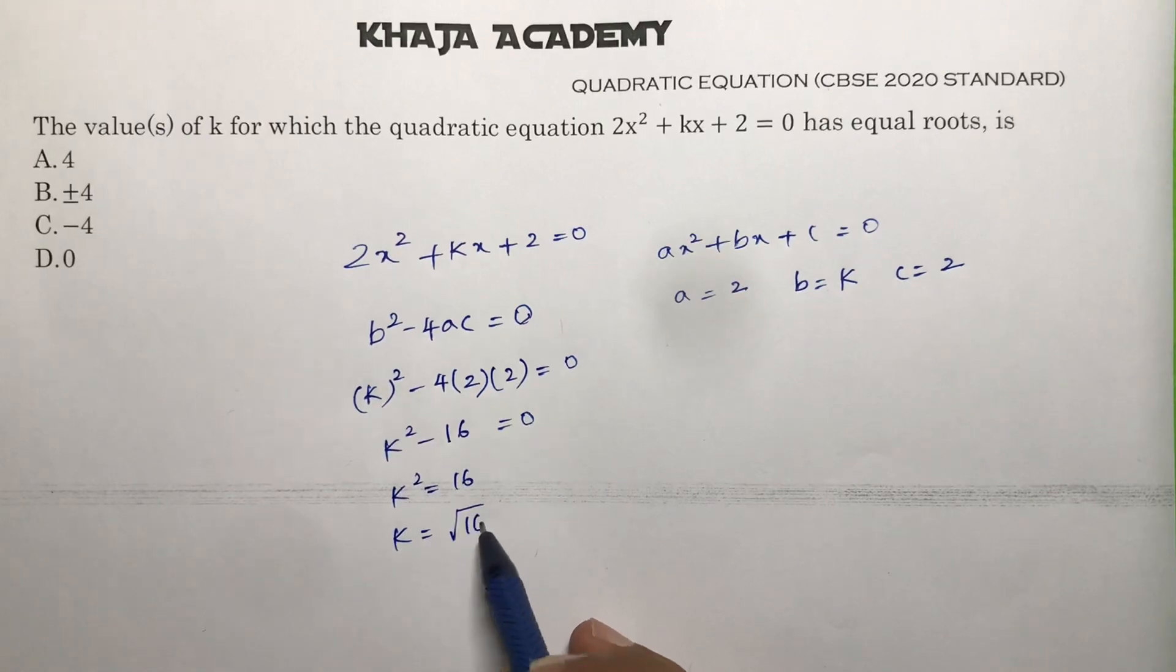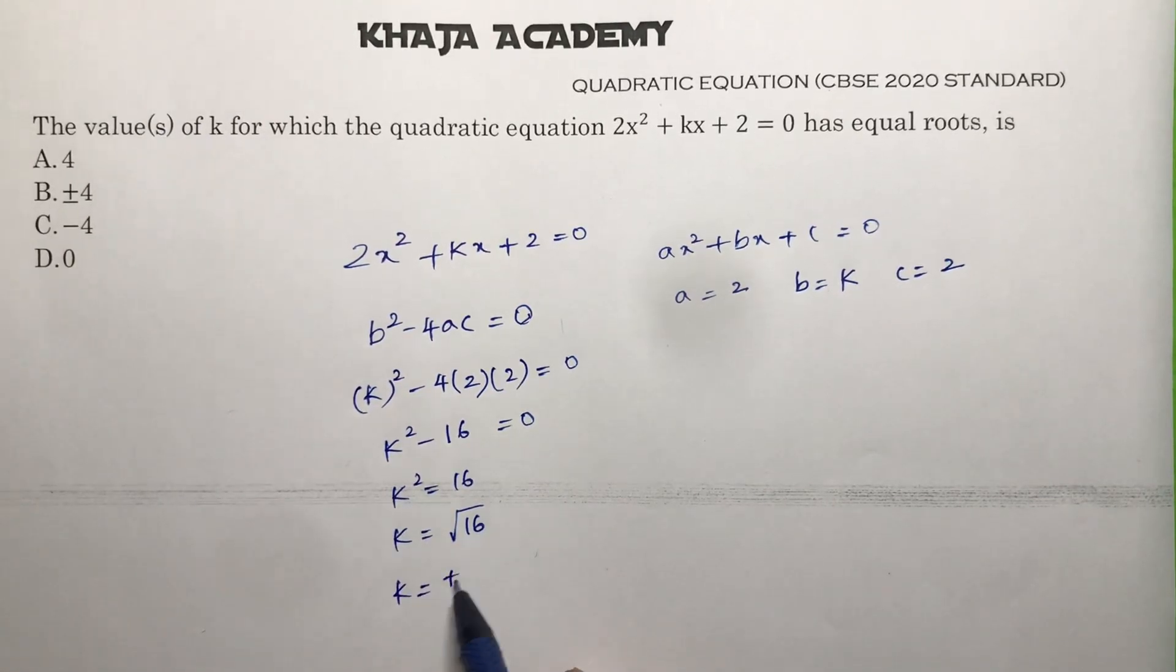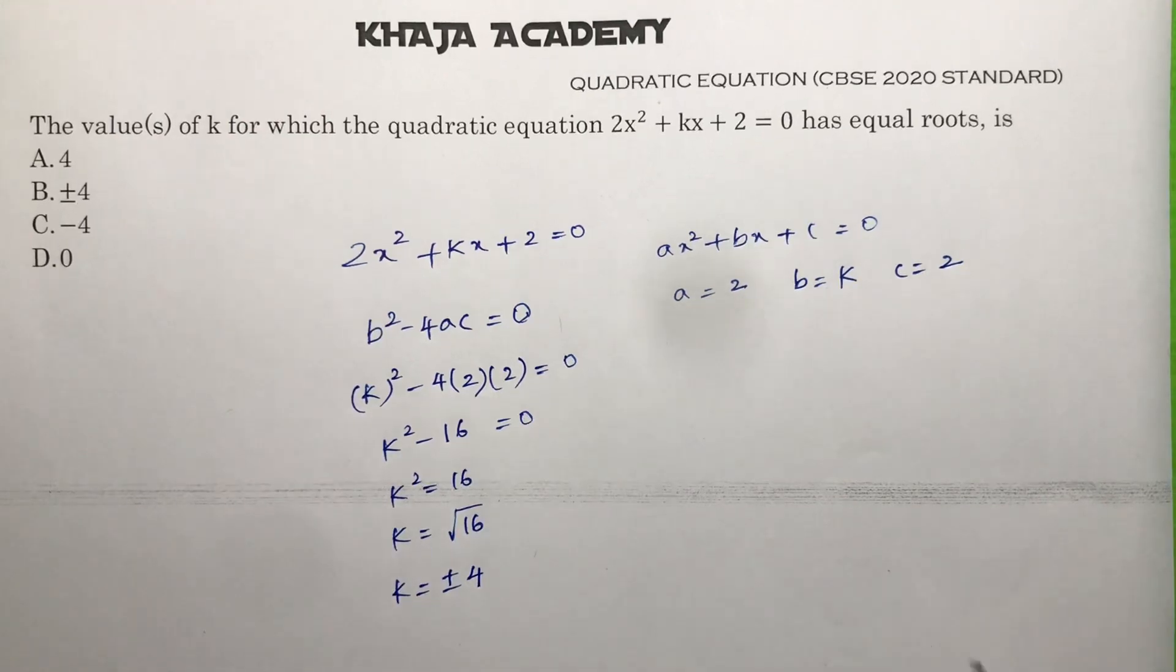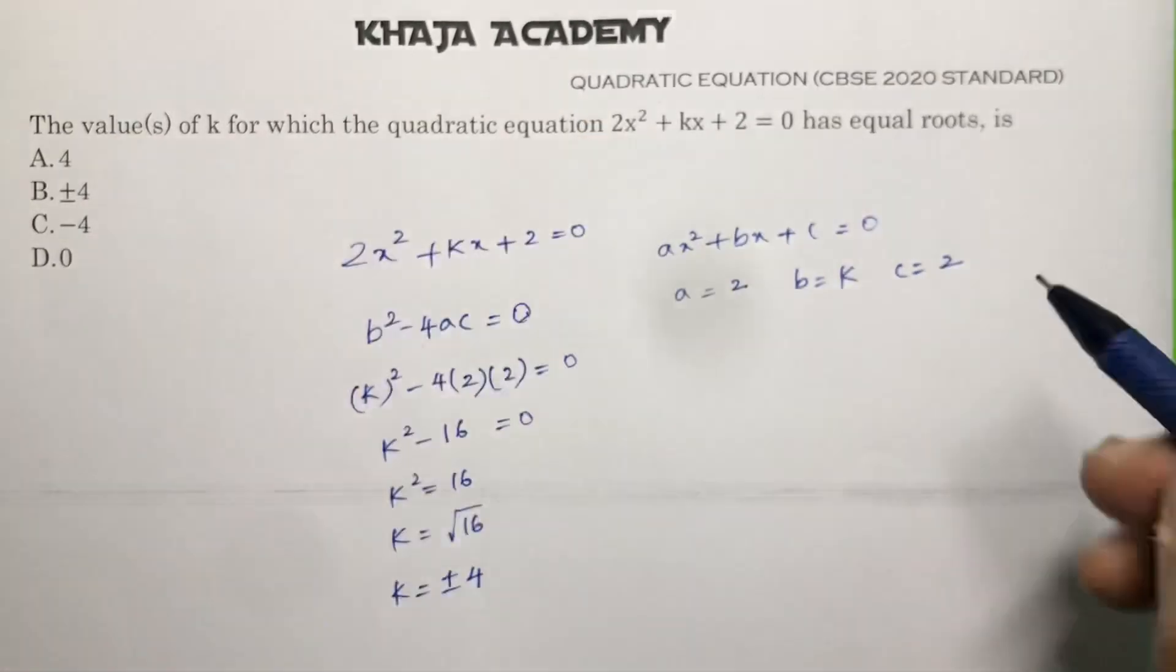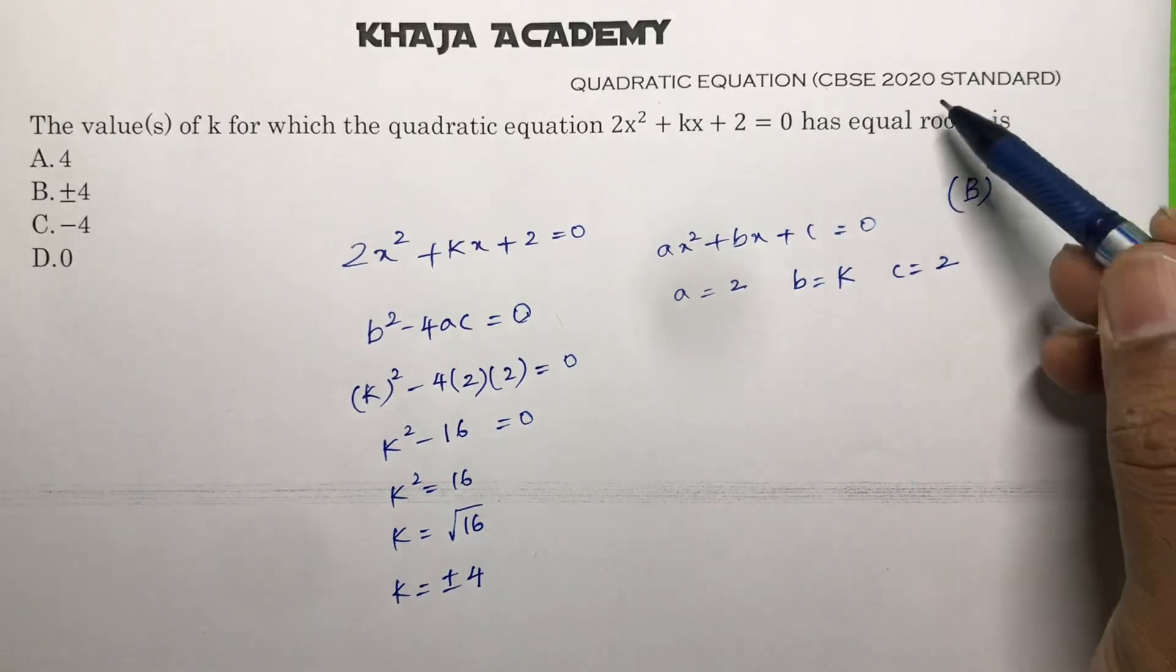So the value of k is ±4, and the correct option is B. This question was asked in the CBSE 2020 standard paper.